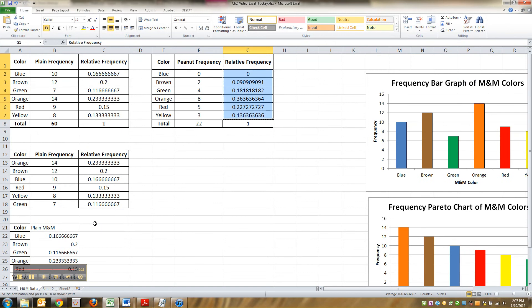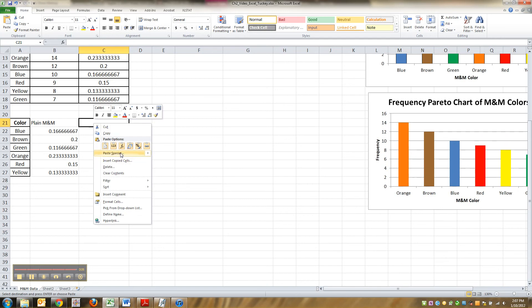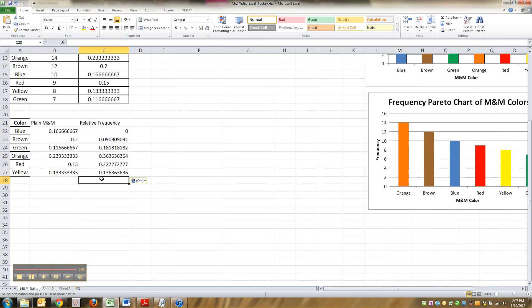And I'm going to do it again. Control, highlight that, control C, go down here, right click, and you can pick it right there. It's that number one, two, three, or paste special. And you want the values. There they are.